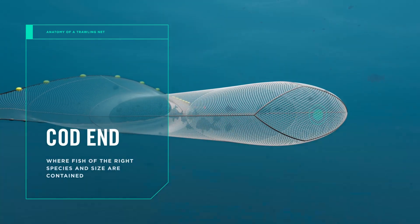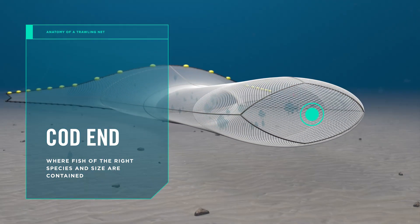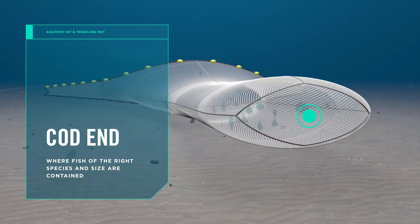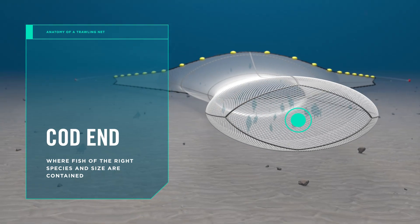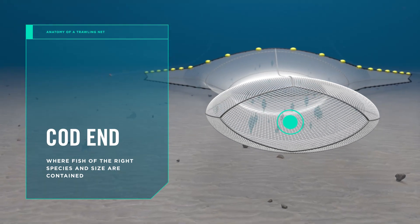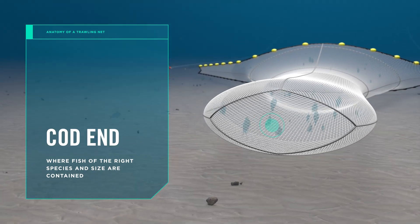The cod end is where fish of the right species and size are harvested and contained. On that subject, modern nets are designed to be highly selective of the fish they harvest and bycatch has been significantly reduced as a result.